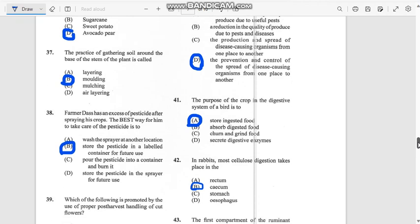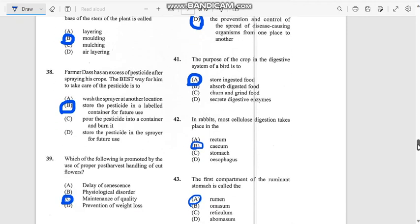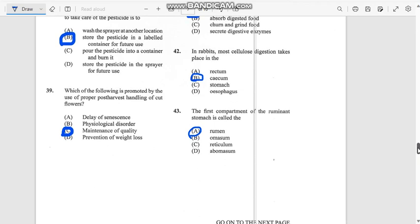Number 38: Farmer has an excess of pesticides after spraying his crops. The best way for him to take care of these pesticides is to store the pesticides in the labeled container for further use.